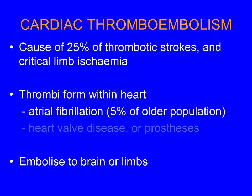I want to just briefly talk about thrombi arising in the heart and embolizing to the limbs and brain, because this is the cause of about 25% of thrombotic strokes and about a similar proportion of critical limb ischemia. The usual cause nowadays is atrial fibrillation — a common arrhythmia prevalent in about 5% of the older population. With an aging population, this arrhythmia is becoming important, and the paralysis of atrial function encourages thrombi. You can also get thrombi on diseased heart valves — congenital valve disease, rheumatic heart disease, endocarditis in intravenous drug users, and prosthetic valves can also be a source of thromboembolism.